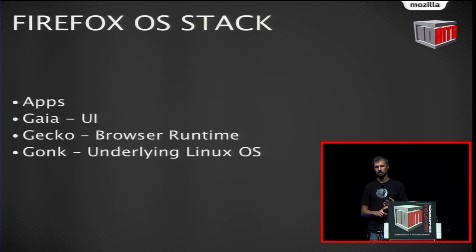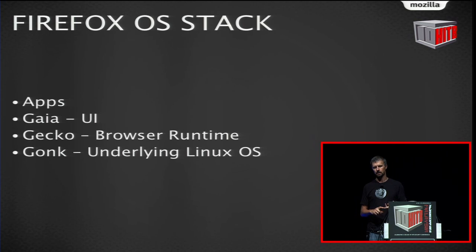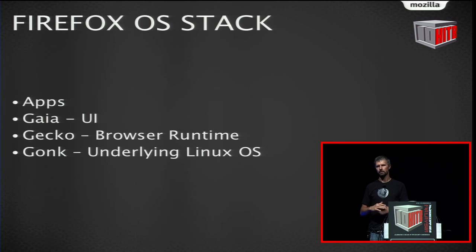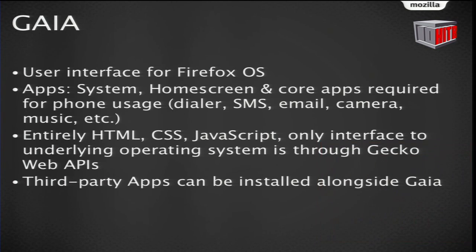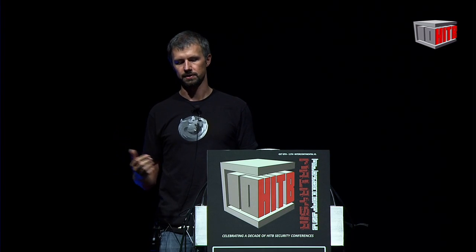On top of that is Gecko, which is the core runtime that drives Firefox, Thunderbird, and Fennec. Gaia is what we call our UI layer — all the visible UI written in CSS, JavaScript, and HTML. On top are a bunch of apps, also CSS, HTML, and JavaScript. Gaia is the user interface for Firefox OS and the interface model — all apps go through it when they talk to the user, including system dialogues and permission dialogues.